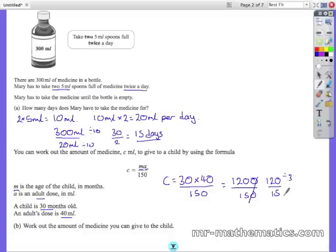Divide both by 3 to make the fraction simpler. So it is 40 divided by 5 which is 8. So C equals 8.